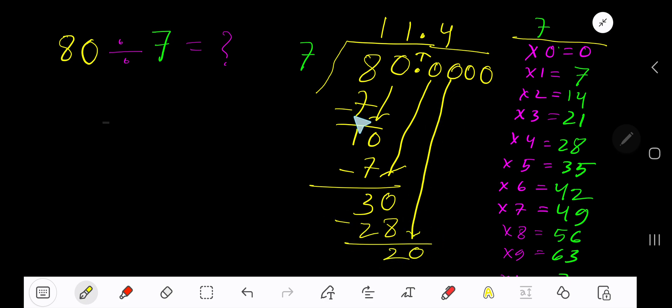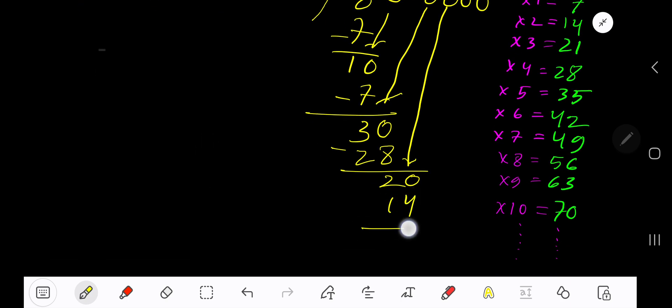7 goes into 26 how many times? 3 times 21 which is greater, so 2 times. 2 times 7 is 14. Subtract, you are getting 6. Bring down another 0. 7 goes into 60 how many times? 9 times...